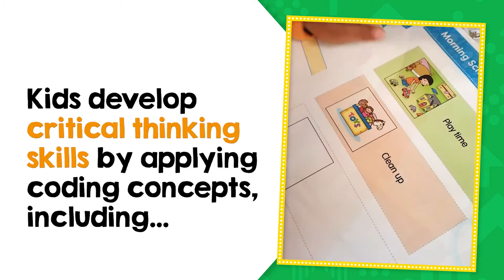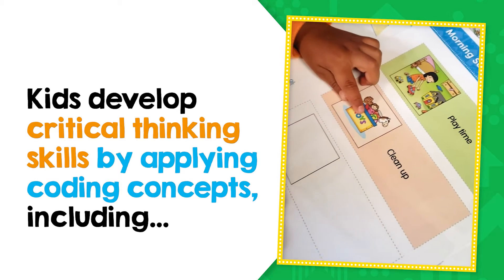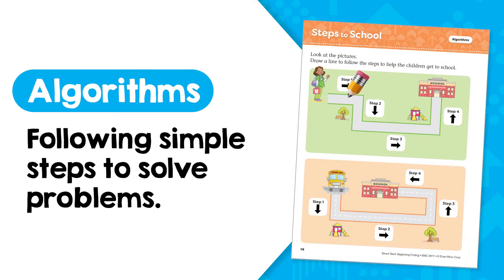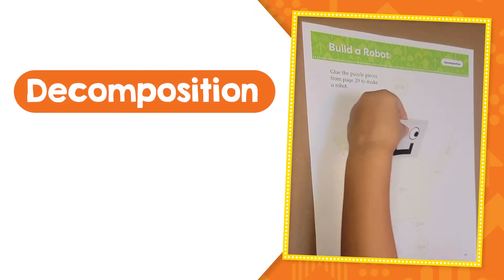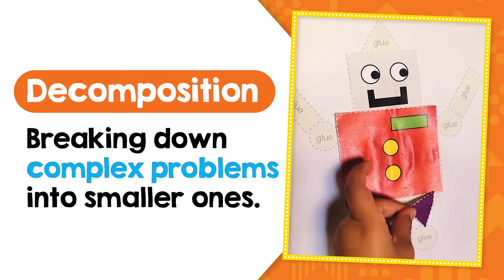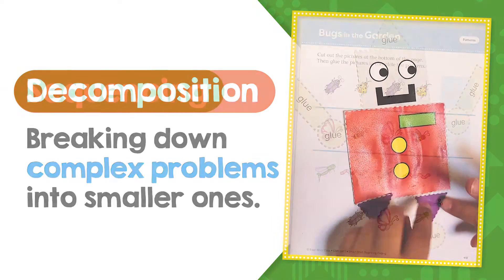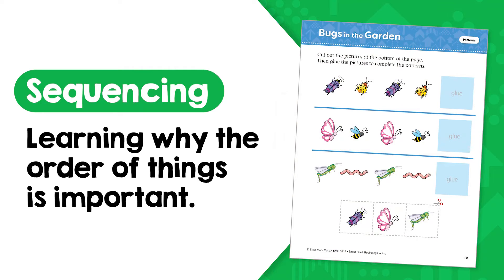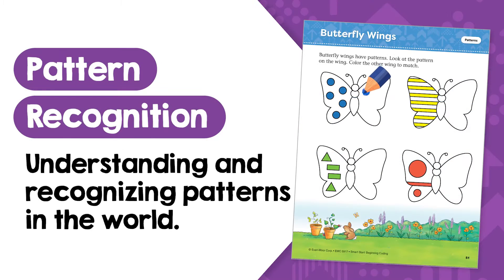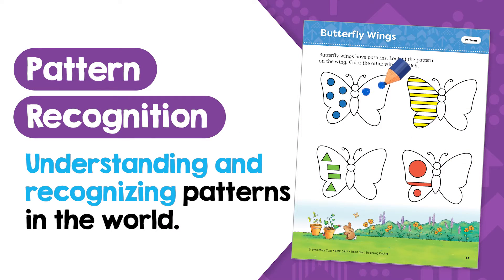Children develop critical thinking skills by applying coding concepts, including algorithms — following simple steps to solve problems; decomposition — breaking down complex problems into smaller ones; sequencing — learning why the order of things is important; and pattern recognition — understanding and recognizing patterns in the world.